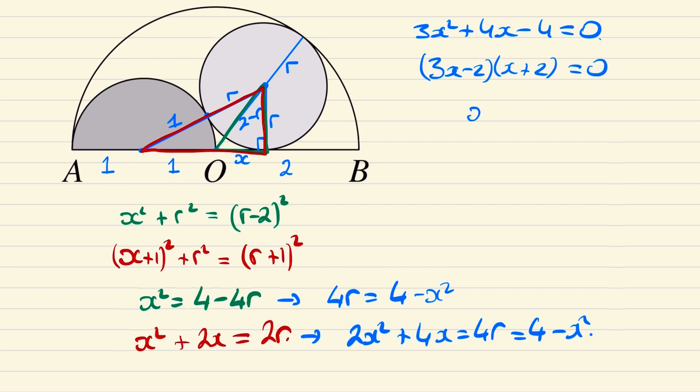And so x is equal to two thirds and putting this back into this equation this gives us r is equal to eight ninths and so we're done.